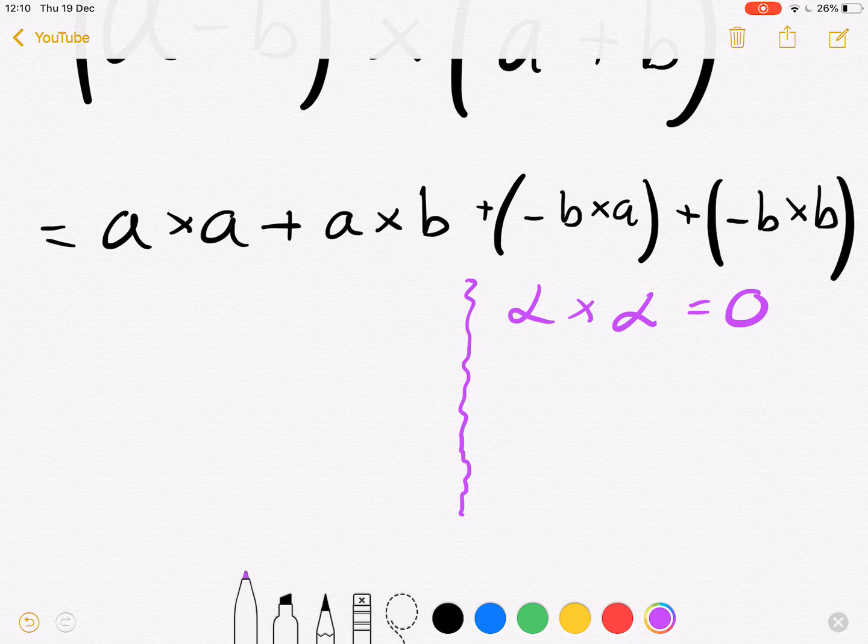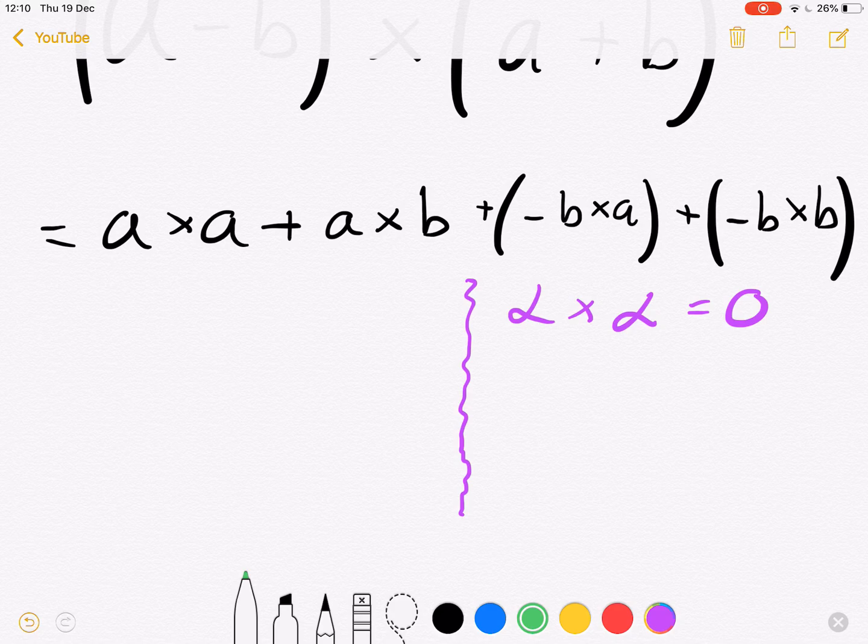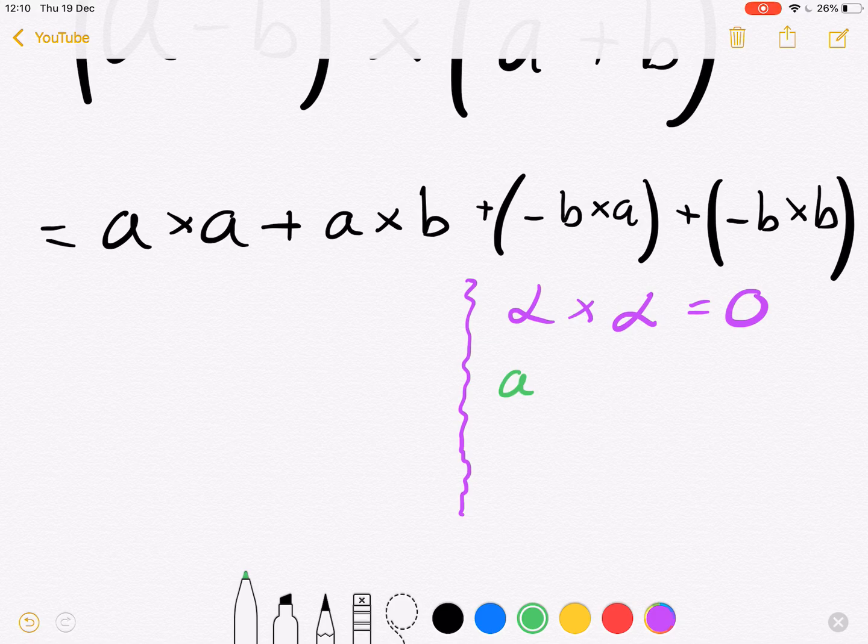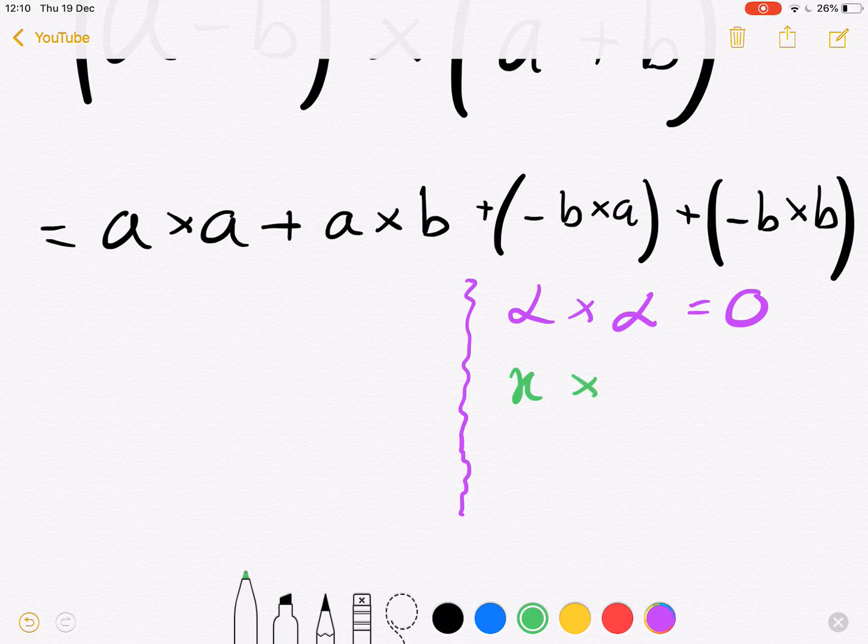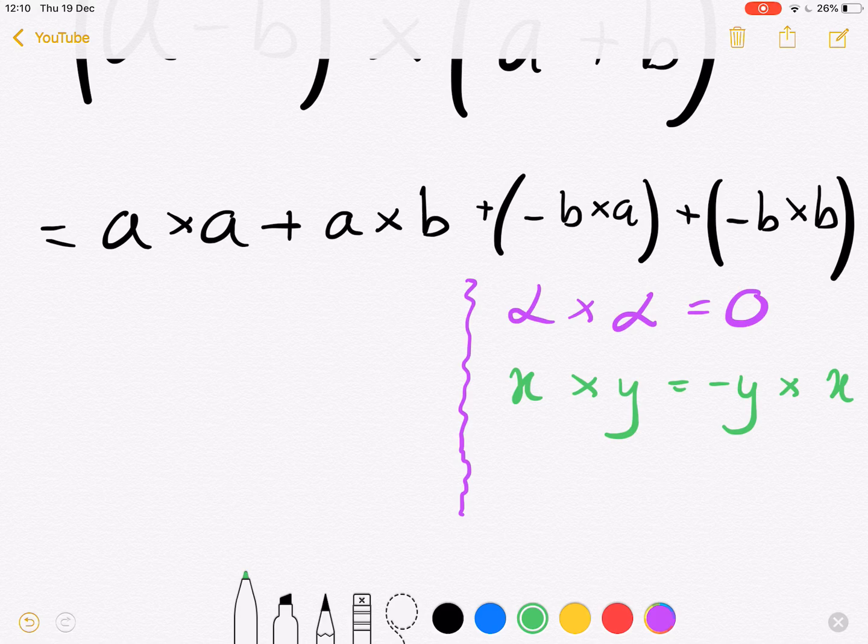And also another interesting property is that if we had any two vectors, for example x × y, this is equivalent to -y × x. Now we can use this to simplify the above expression, so let's go.